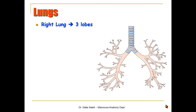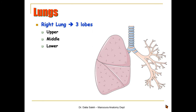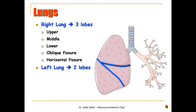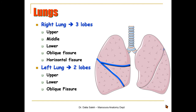The right lung is made of three lobes — upper, middle, and lower lobes — separated from each other by two fissures: the oblique and horizontal fissures. The left lung is made of only two lobes, the upper and lower lobes, separated by an oblique fissure. The left lung is also characterized by a discontinuation of its anterior border called the cardiac notch, and below it there is a small extension called the lingula.